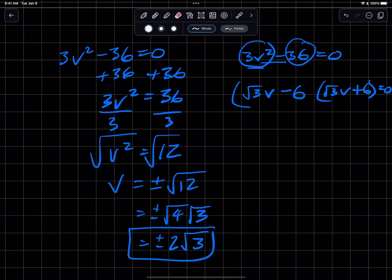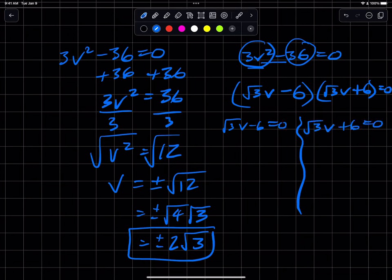Now that I've factored it, I can just say square root of 3v minus 6 is equal to zero. Square root of 3v plus 6 is equal to zero, just like we would if we factored a trinomial.